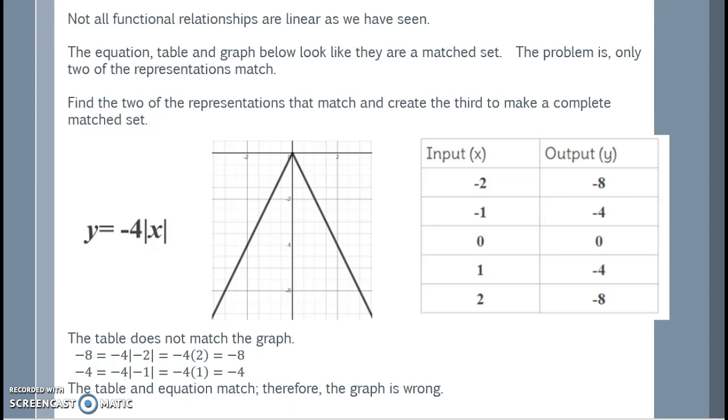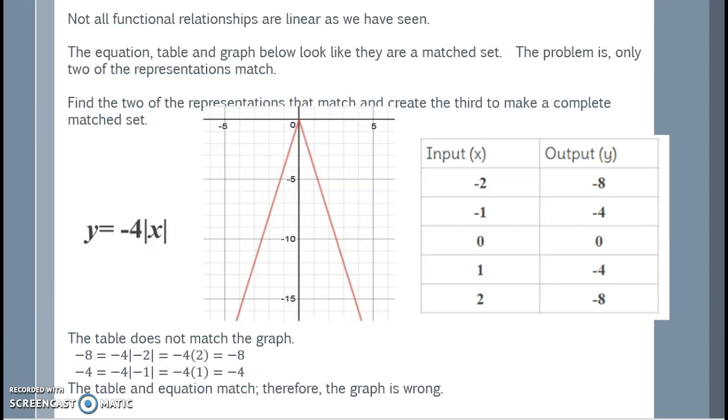So, I will create a new graph that matches these points. So, now when I plug in my negative 2, I see that it does cross at negative 8. When I plug in negative 1, we cross at negative 4, 0, 0, 1, 4, and 2, negative 8.